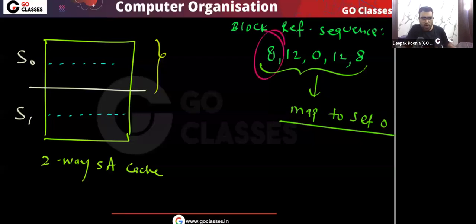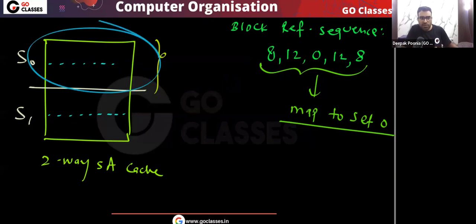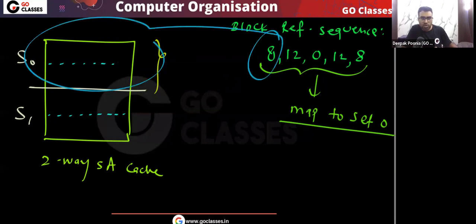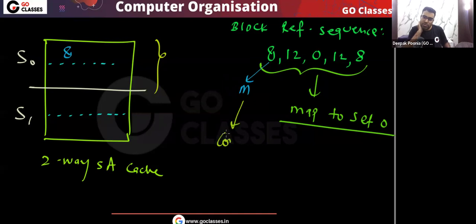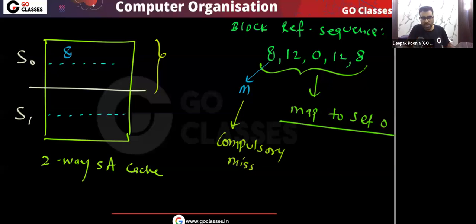When we access memory block 8, it maps to set number zero — we fetch it into the cache memory. Of course, this is a miss. This block number 8 is a compulsory miss because this is the first reference to block number 8.